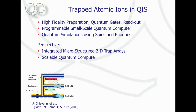The canonical proposal is one where you have an ion trap chip with different electrodes — the yellow things — and then you can move your ions between so-called processor zones where you do quantum logic, and memory zones where you store your quantum information. Most of the time, about 99% in concrete proposals, you spend moving your ions around.